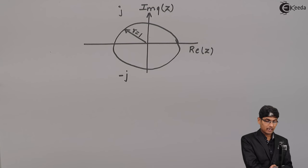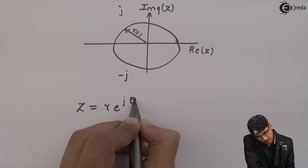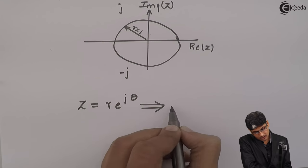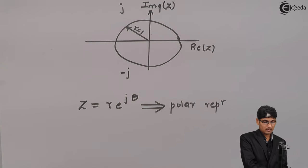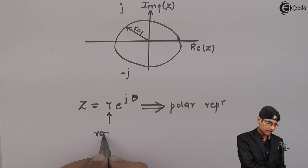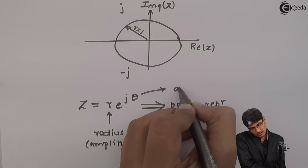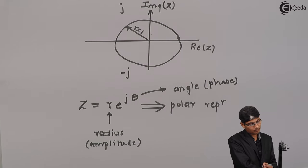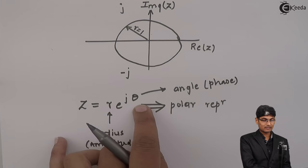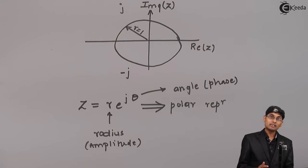Before plotting and understanding the physical significance of poles and zeros, let us briefly look at how the z-plane is structured. The basic representation is z = re^(jθ), which is a polar representation of a complex number. Here r denotes the radius or amplitude, and theta is the angle or phase. We have two variables in z: r and theta.